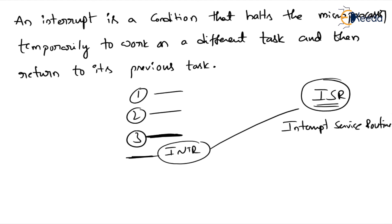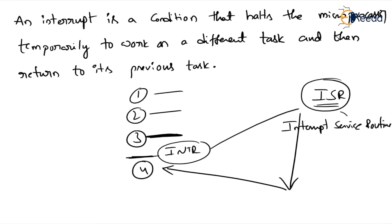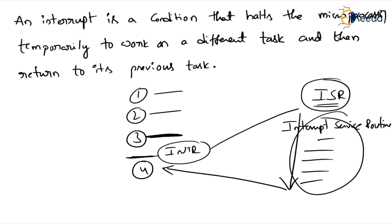After the execution of the ISR, control returns back to the main routine — it comes to the next instruction (e.g., the fourth instruction) and continues. So ISR is a simple program used to execute that particular interrupt. Now, what are the steps involved to execute an interrupt?